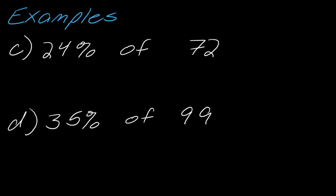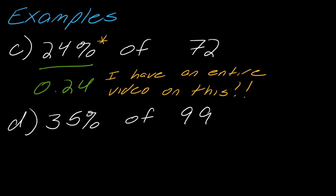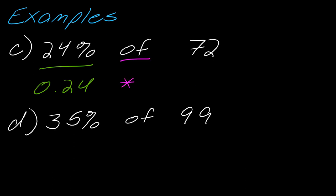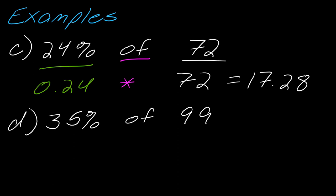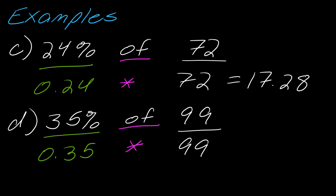Now let's go back to this 'of' idea. For 24% of 72: 24% written as a decimal is 0.24, and 'of' means multiply, so it's 0.24 times 72, which gives 17.28. For 35% of 99: 35% is 0.35, times 99, gives 34.65.